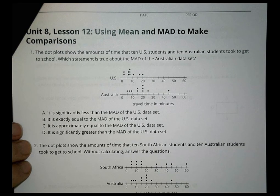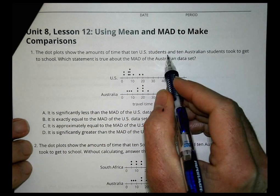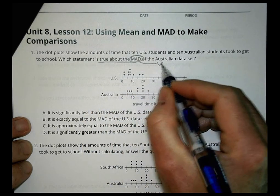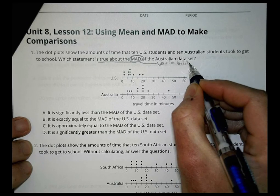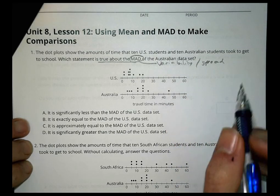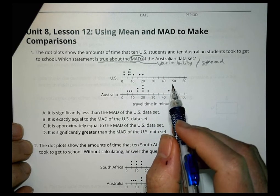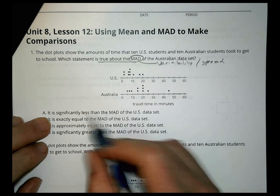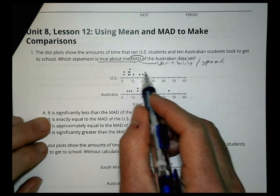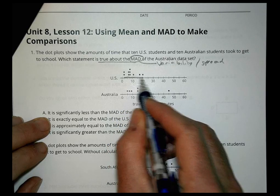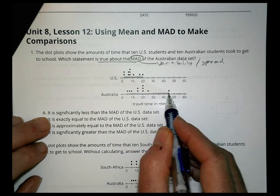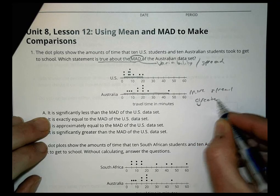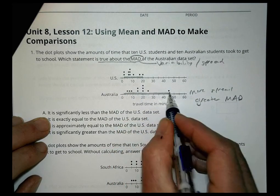Lesson 12 homework. The dot plot shows the amounts of time that 10 US students and 10 Australian students took to get to school. Which statement is true about the mean absolute deviation? Talking about variability — how spread out things are — the US is clustered between about 5 and 20, while Australia goes from about 5 to 45. So Australia is definitely more spread, meaning it will have a greater mean absolute deviation just based on what we can visually see.